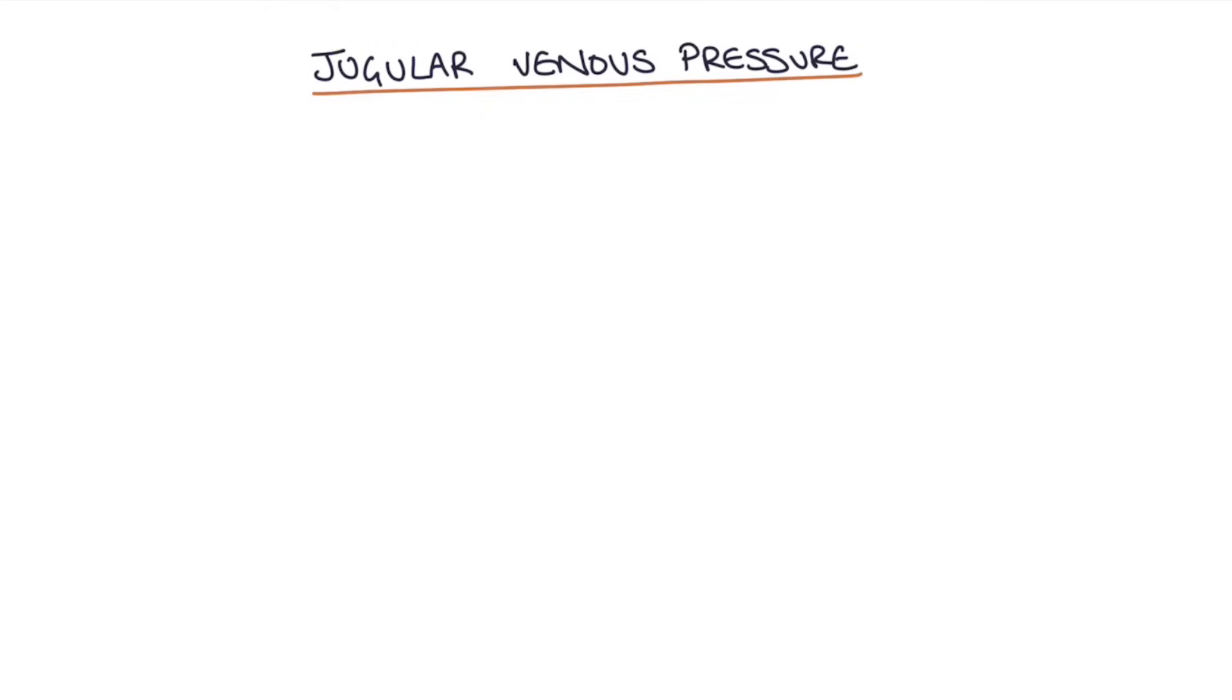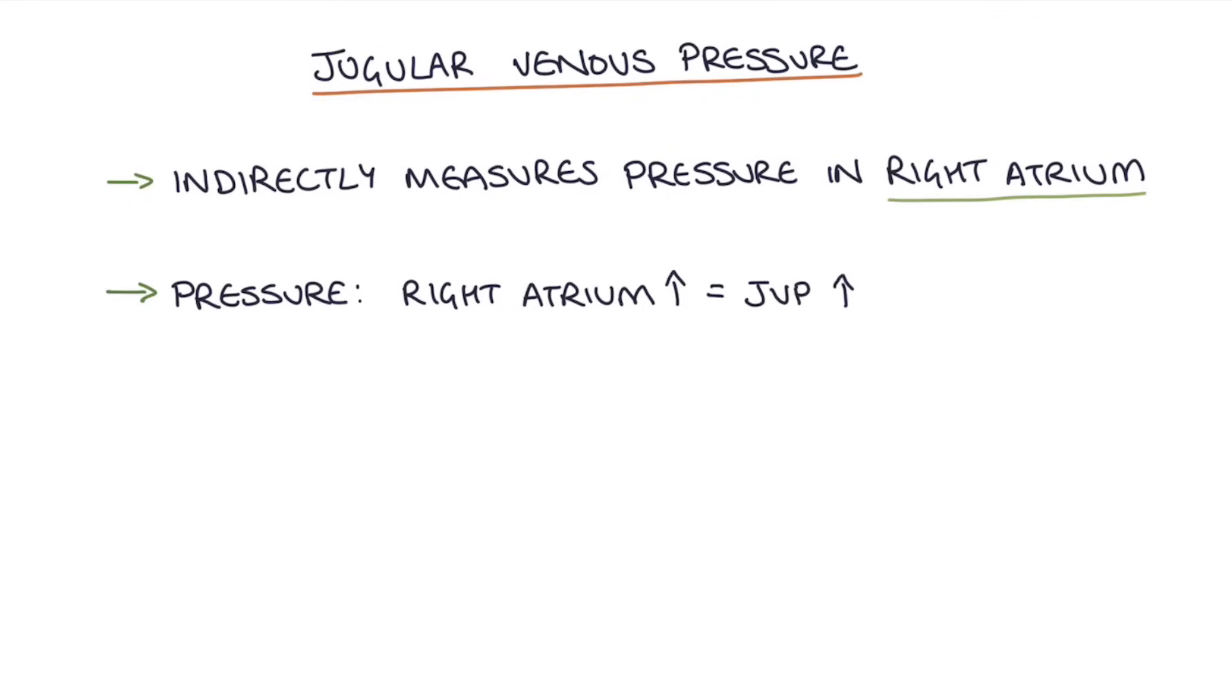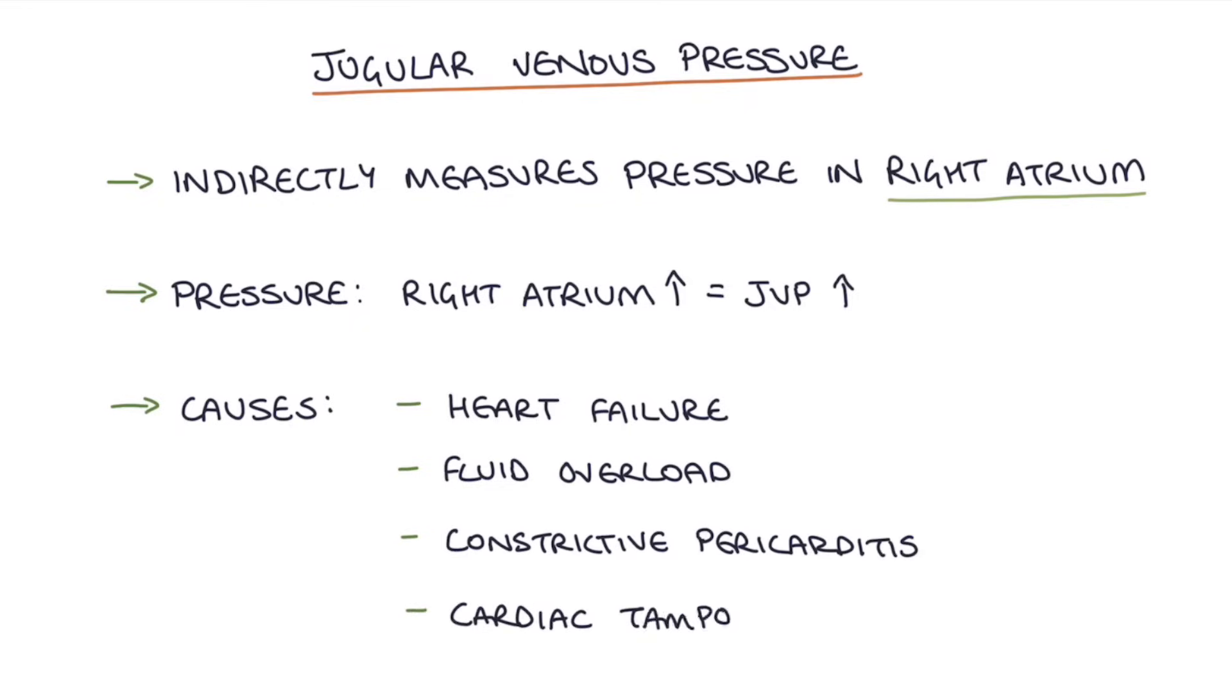So what is the JVP? The JVP is a way to indirectly measure the pressure in the right atrium and in the venous system. If the pressure in the right atrium is higher, then the JVP will be higher. A raised JVP can be caused by four things mainly: heart failure, fluid overload, constrictive pericarditis, and cardiac tamponade.